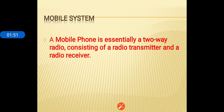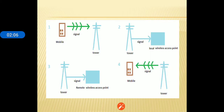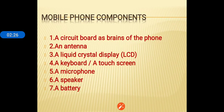The new topic is mobile systems. A mobile phone is essentially a two-way radio consisting of a radio transmitter and a radio receiver. The signal transmits from the mobile to a tower, then to a wireless access point, then to a remote wireless access point, and then the signal is transmitted from the tower back to the mobile.